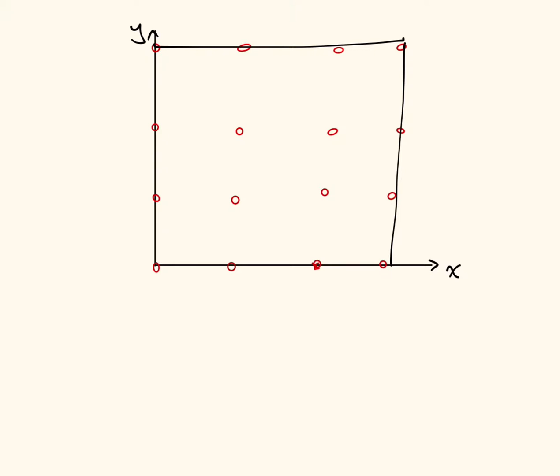Before we can write this in a big matrix, we need to make our grid and identify all of our unknowns. Here I've re-sketched the previous problem, but I've put 16 red circles on there, and each of those 16 circles is one of the potentials we're going to solve for. The first one in the bottom left corner is phi_(1,1), meaning the first phi in the x-direction and the first phi in the y-direction. This is just my way of labeling all of these potentials.